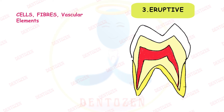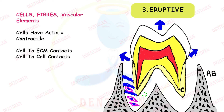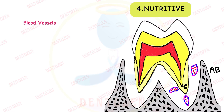The third function is eruptive. Cells, fibers, and vascular elements together play an important role in eruption. Mainly it is the cells that have actin filaments with contractile function — these cells contact the ground substance and extracellular matrix, and when they receive a signal they also contact each other, generating forces that pull the tooth out of the socket and help in eruption. This is explained by the periodontal ligament traction theory of tooth eruption.